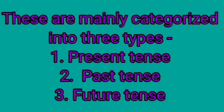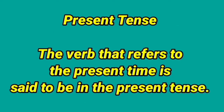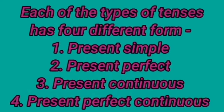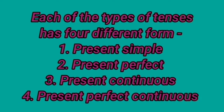Tenses are mainly categorized into three types: present tense, past tense, and future tense. Present tense means vartamankal, past tense means bhutkaal, future tense means bhavisyakal. First we will learn about present tense. Each of the types of tense has four different forms: first, present simple tense; second, present perfect tense; third, present continuous tense; fourth, present perfect continuous tense.